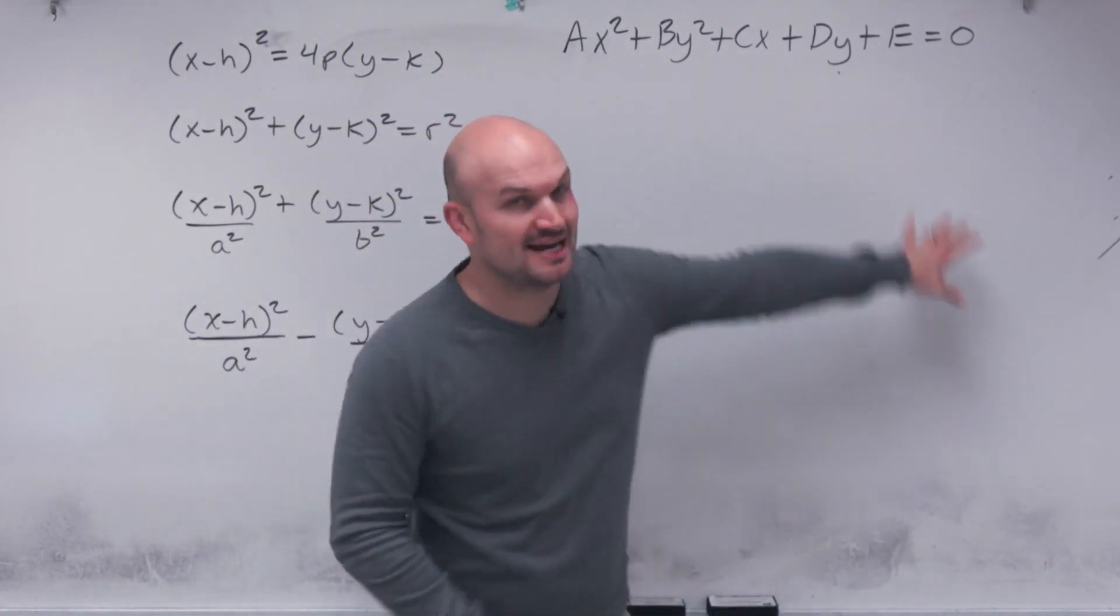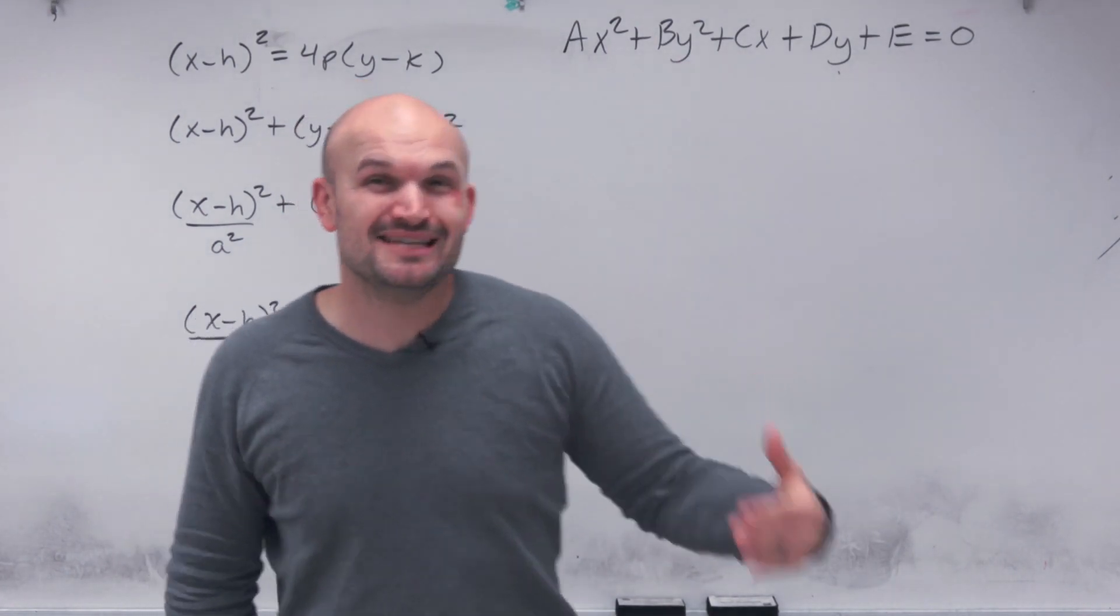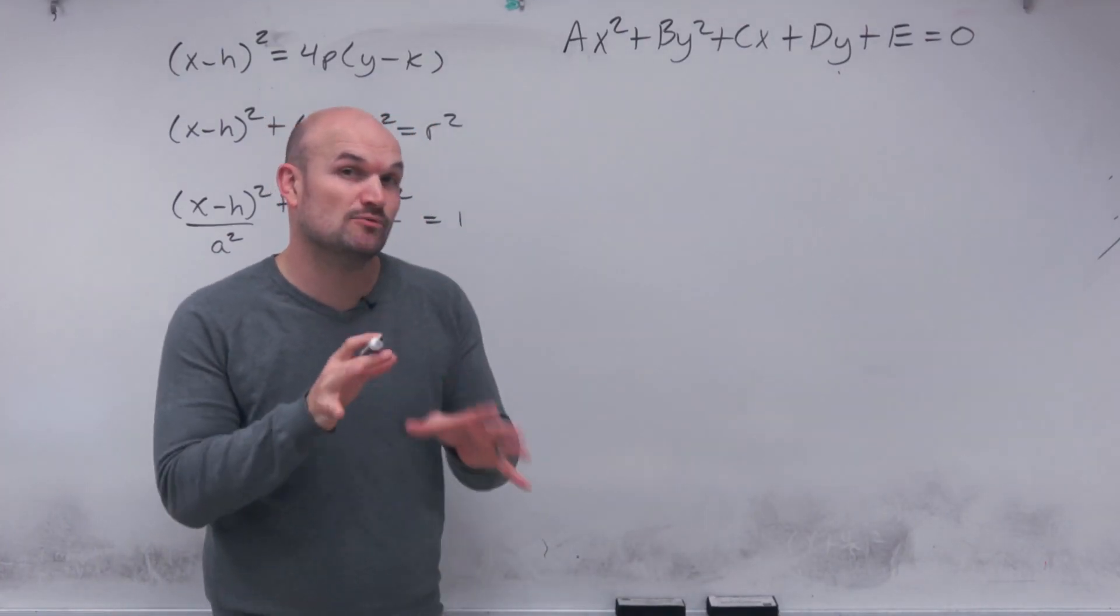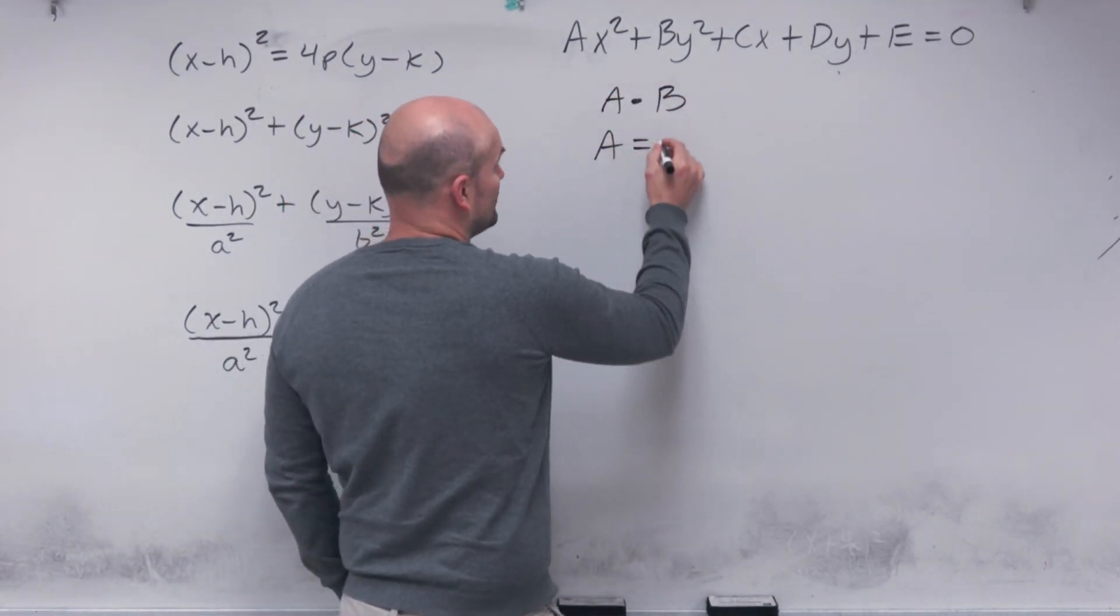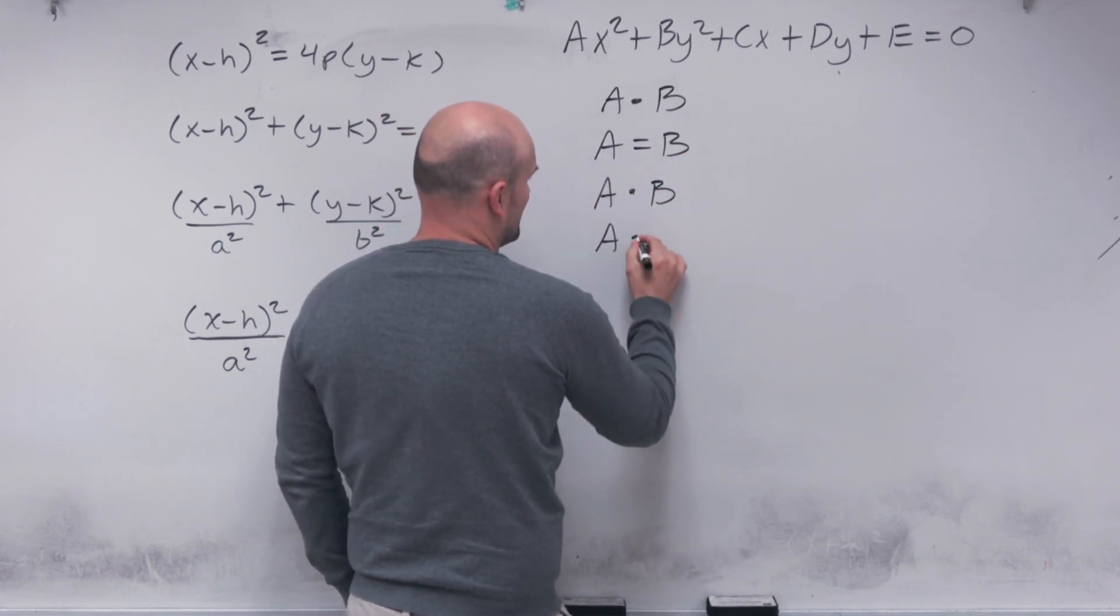When we want to classify a conic section in general form, rather than worrying about everything that's up here, the only thing we need to care about is our A and B. So when classifying our conic section, there's a couple of things that we're going to compare. We're going to look at A times B, we're going to look at A is equal to B, and then we're going to look at two more products of A and B.